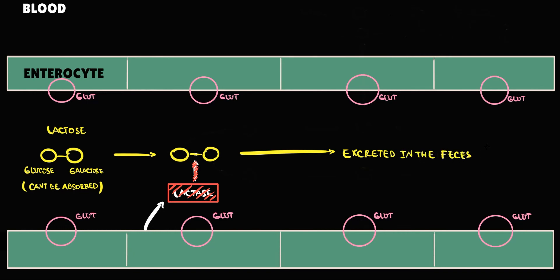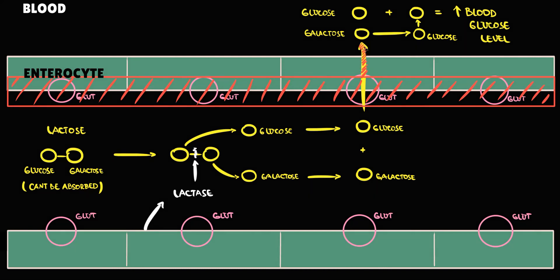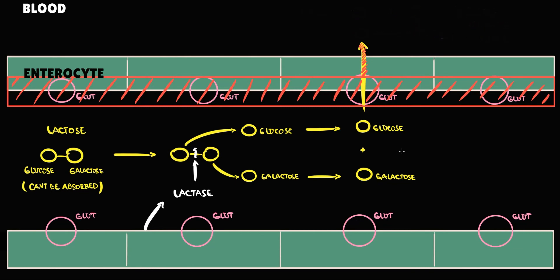Another possibility is damage to enterocytes in the duodenum. For example, in celiac disease lactase is present, so the patient will degrade disaccharides into monosaccharides. But the problem is that damaged enterocytes do not have GLUT transporters, so they cannot absorb glucose and galactose from the intestine into the blood. In this case, both glucose and galactose will be excreted in the feces.